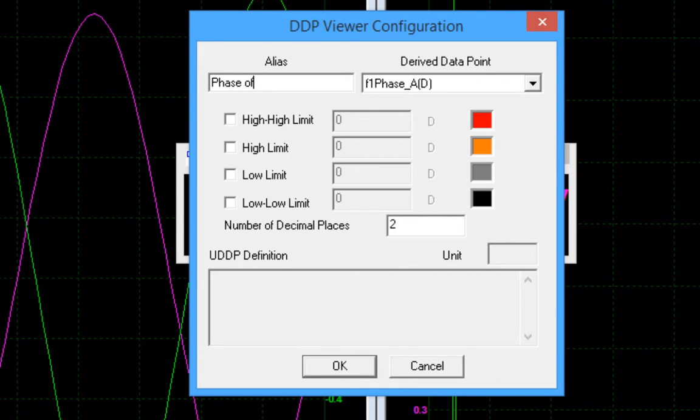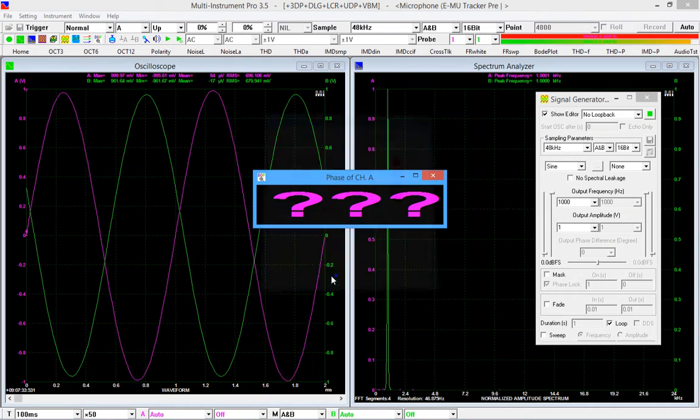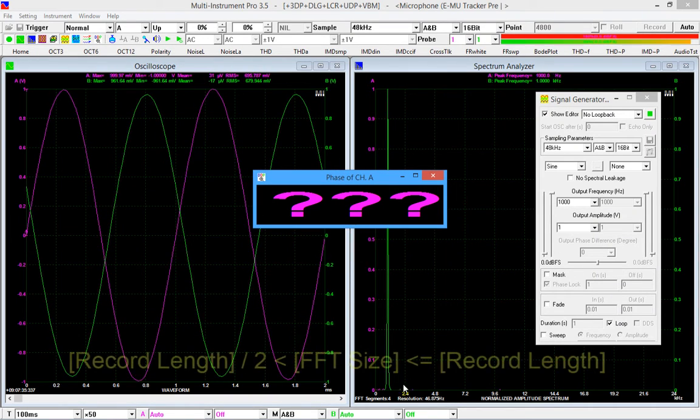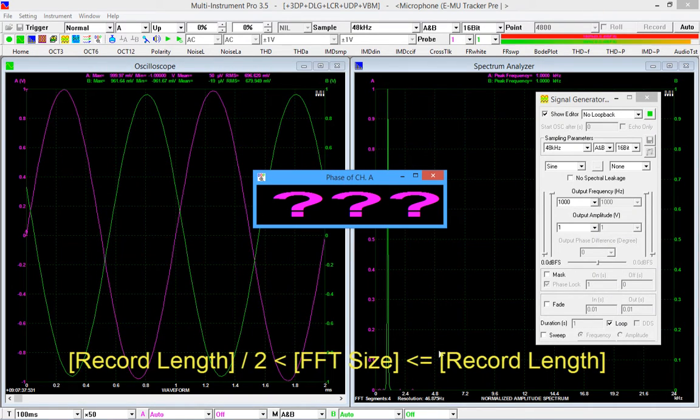In Multi-Instrument, in order to display the initial phase of the captured waveforms, the FFT size of the spectrum analyzer must be equal to or less than the record length of the oscilloscope, and greater than half of it. The current record length of the oscilloscope is 4800, so select 4096 for the FFT size.